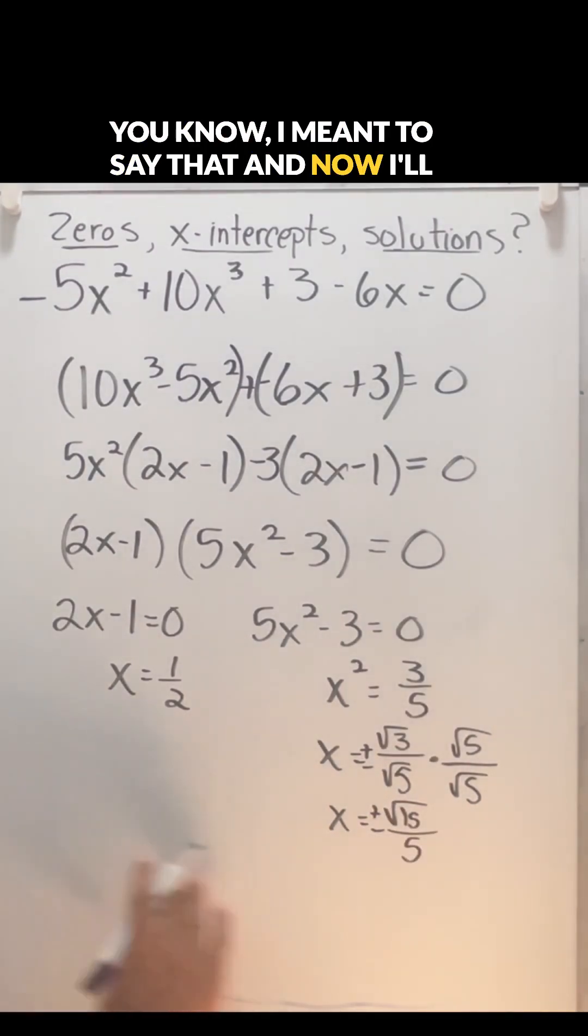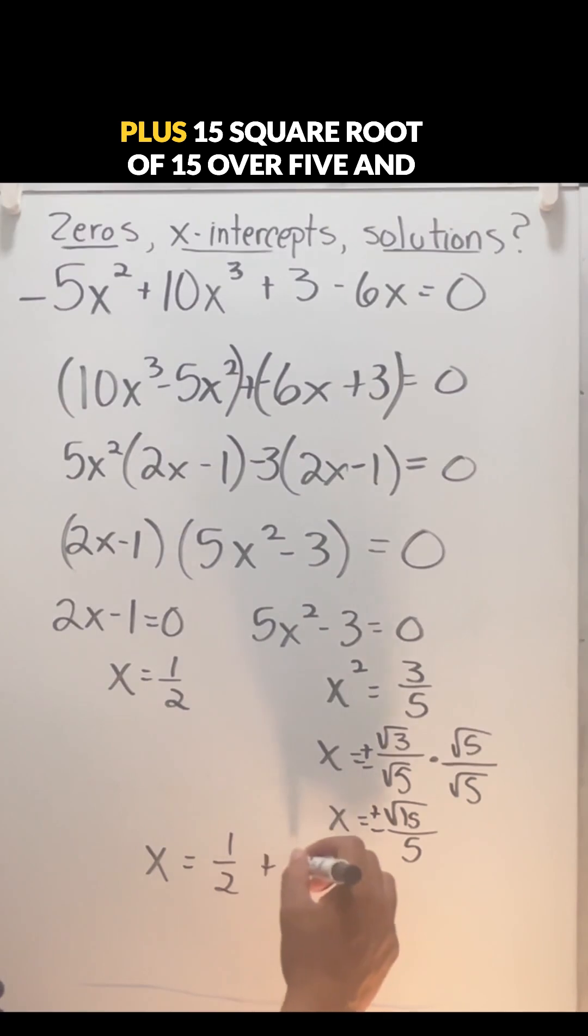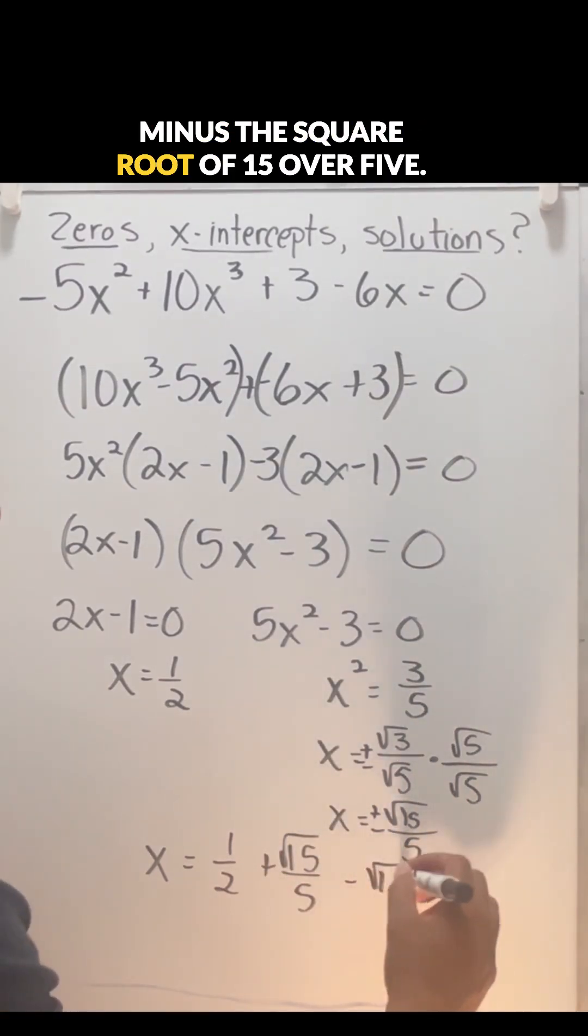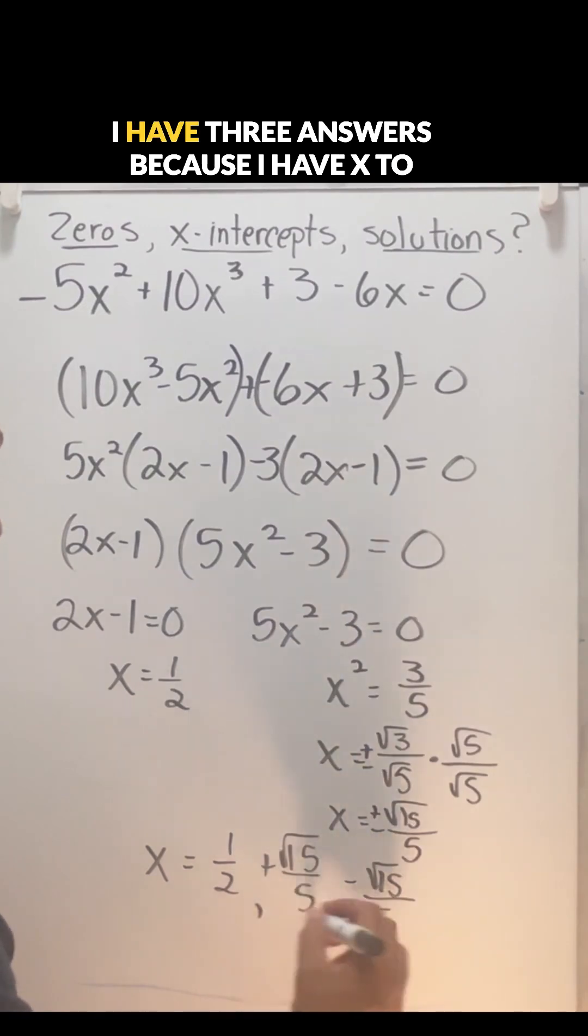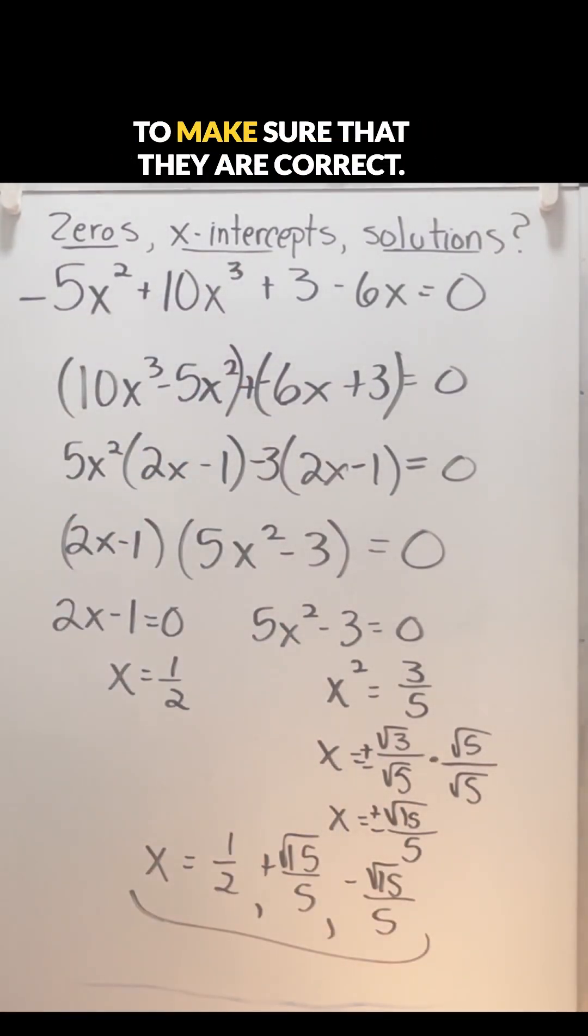Now I'll write my final answer. X equals one half, plus square root of 15 over five, and minus square root of 15 over five. I have three answers because I have x to the third, and so I can check those answers to make sure that they are correct.